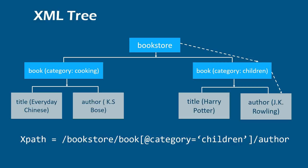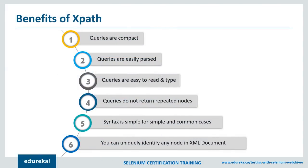Basically, every web page is a document that consists of tags and attributes. By using XPath, we can query the page document — whether it's XML, HTML, etc. To locate a particular element, we can write an XPath query that uses the element's tag name as well as its attributes, and the query returns the matching element in XML. Every modern browser has a built-in XPath engine. Now let's see some benefits of XPath: queries are compact and easily parsed, syntax is very simple for common use cases, queries are easy to read and type, they do not return repeated nodes, you can uniquely identify any node in an XML document, and query strings are easily embedded in program scripts and XML documents.